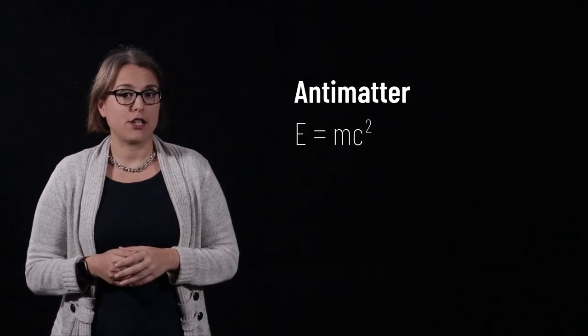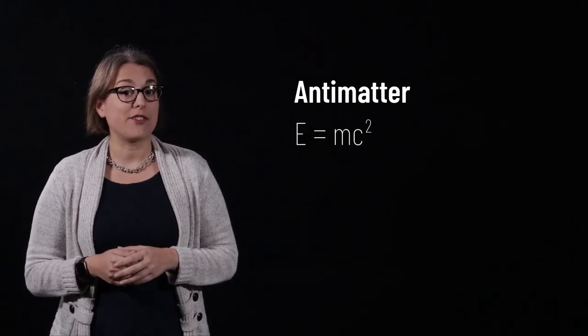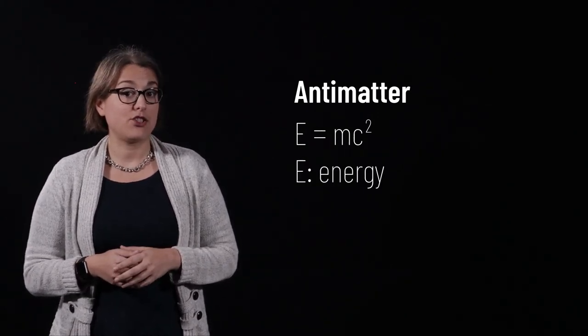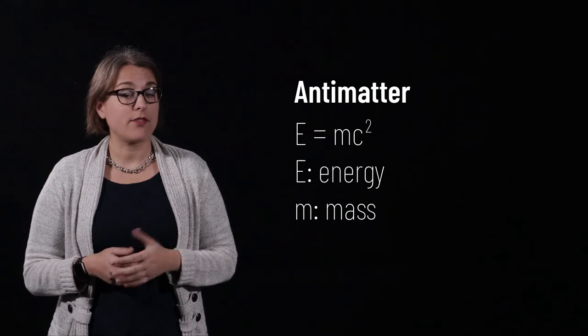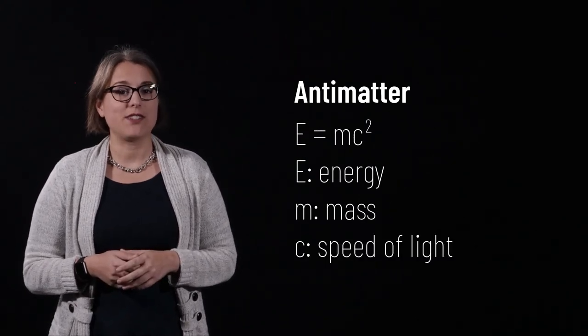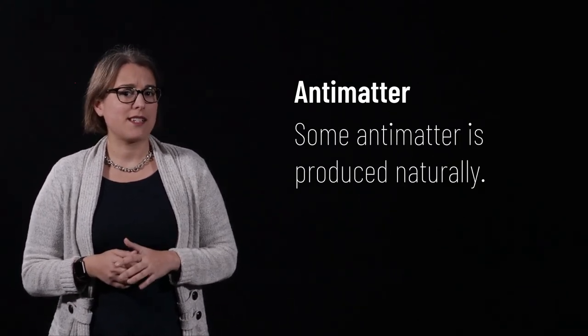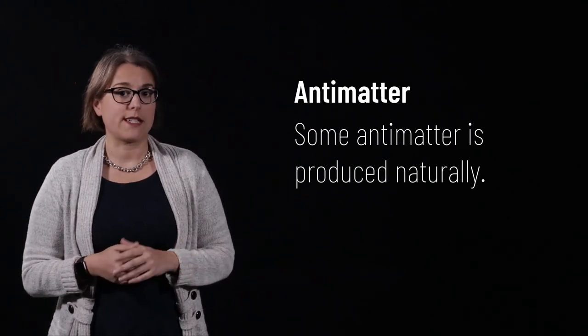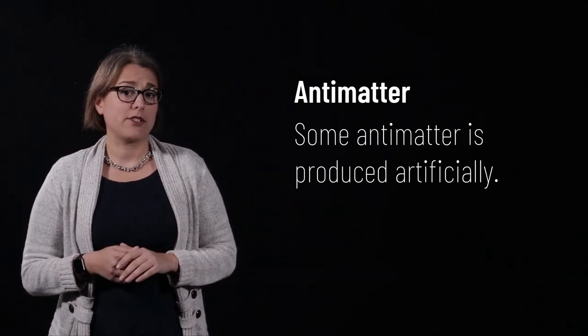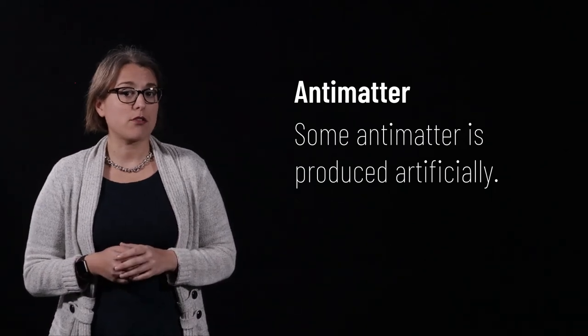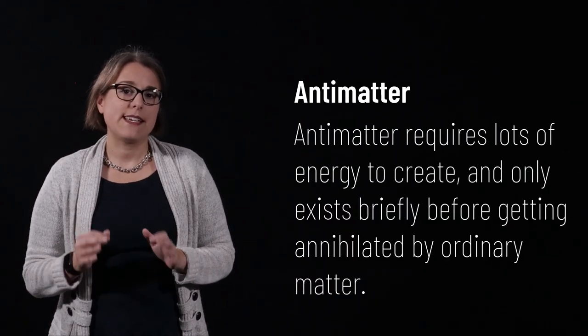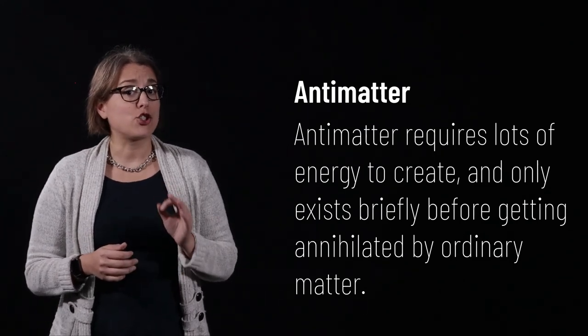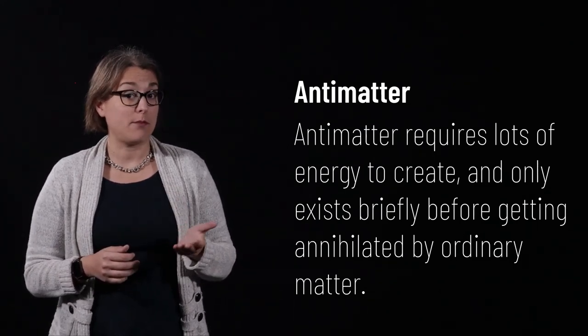When a particle and its antimatter partner come into contact, they annihilate each other and create energy. The amount of energy created can be calculated using the famous equation E equals MC squared. E is the energy generated, M is the mass of the particles, and C is the speed of light. Some antimatter is naturally produced as the result of radioactive decay, for example. Antimatter is also artificially produced in particle colliders. These antiparticles take a lot of energy to create, and only exist for a short time before getting annihilated by ordinary matter.